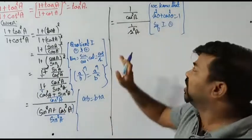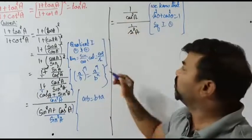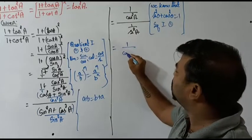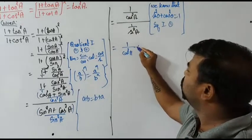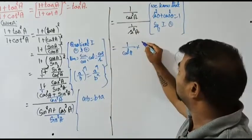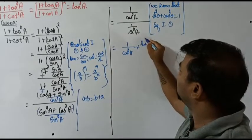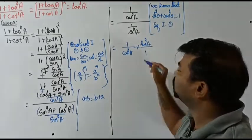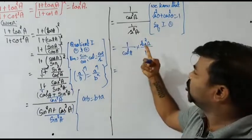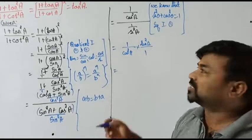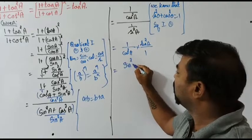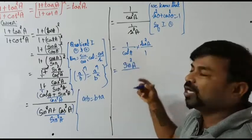Now flip the denominator to the top. We have one over cos square a multiplied by sine square a over one, which gives us sine square a over cos square a.